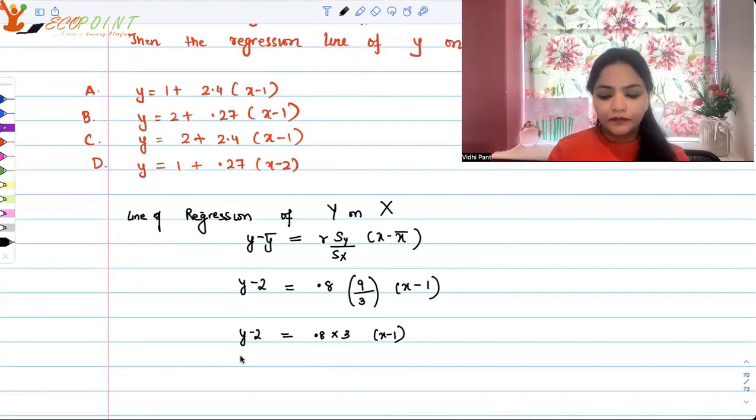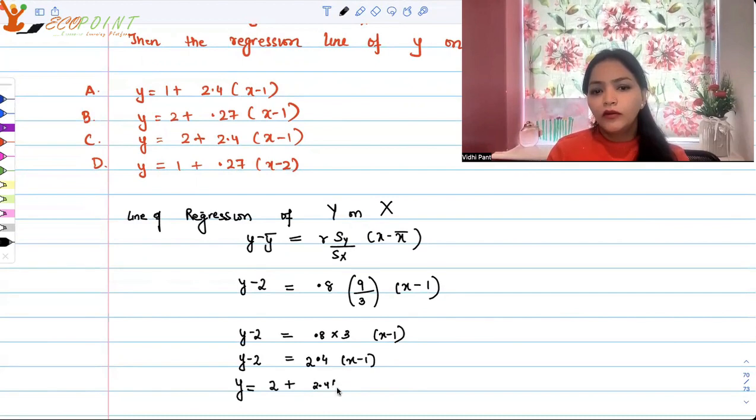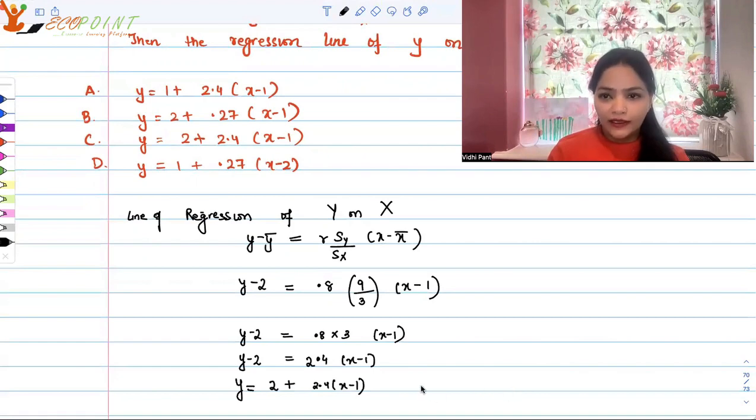So this becomes y minus 2 equals 2.4 times x minus 1. Do we have that option? Yes, I can see that option C is exactly the same thing. So this is your correct answer. What did we need here? We needed to know this equation. Wait, at the end of this video I will write these details for you.